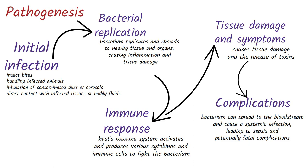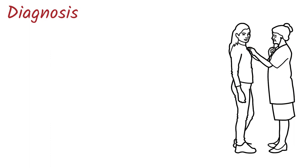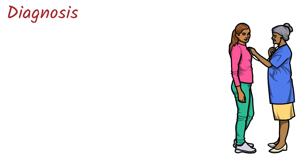Early diagnosis and treatment with antibiotics can help to minimize the severity of the disease and improve the outcome. Let's see how Tularemia can be diagnosed. Diagnosis of Tularemia is typically based on a combination of patient symptoms, medical history, and laboratory tests. Here are some methods that can be used to diagnose Tularemia.